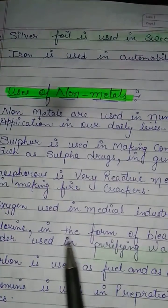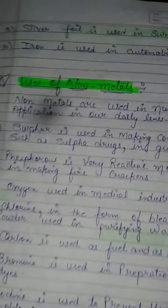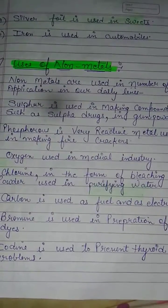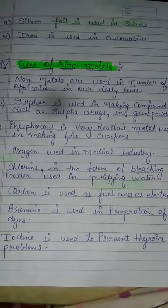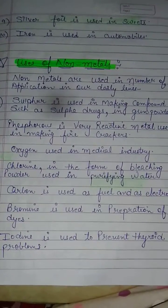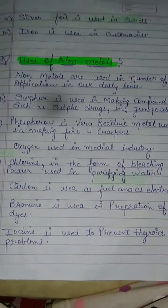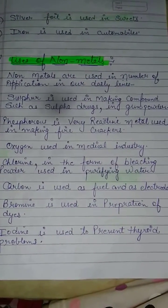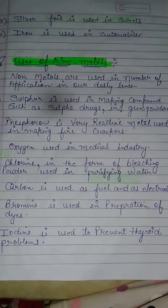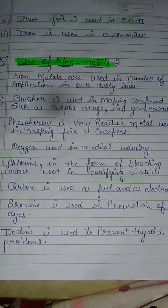Next is Oxygen, which is used in the medical industry. We also have Chlorine, used in the form of bleaching powder and used in purifying water.